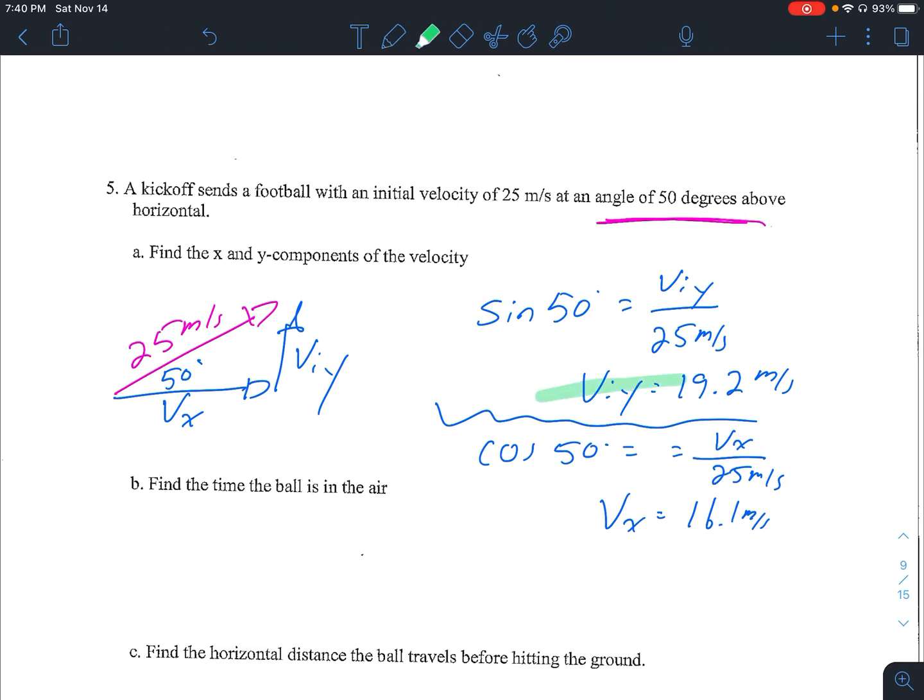So we did find our y component of that velocity and our x component. The reason why we have to do this is because in the y direction our velocity is changing because there is an acceleration. In the x direction there is no acceleration, so it's a constant velocity. This is basically your lab, so this is a good review of that.